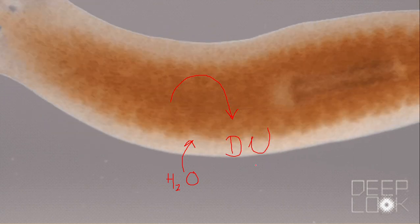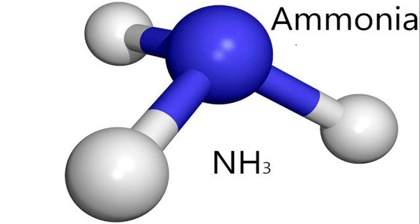The dilute urine is rich in ammonia (NH3). Ammonia is a nitrogenous waste that needs a large amount of water to be excreted — about 500 ml of water is needed to excrete one gram of ammonia nitrogen. Since planaria live in fresh water environments with excess water available, they can easily excrete their nitrogenous waste in the form of ammonia.